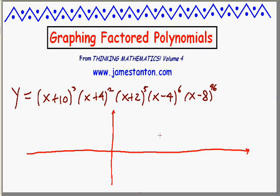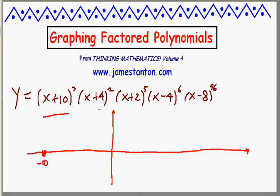Now, if I look at this beast, I can ask myself: are there any interesting x values? And there are some interesting x values staring me in the face. For example, I know if I put in x = −10, this term becomes zero, which makes the whole polynomial become zero. So right away I know, at x = −10, the graph crosses the x-axis.